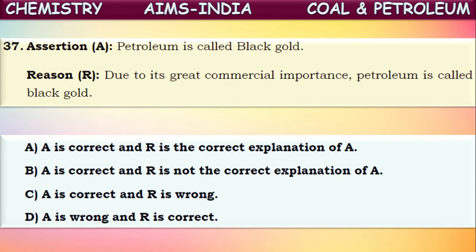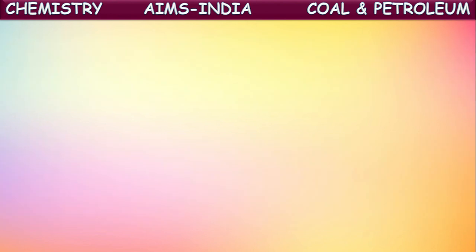Next assertion-reason question. Assertion: petroleum is called black gold. This is correct. Reason: due to its great commercial importance, petroleum is called black gold. This is the correct reason for the assertion. Both statements are correct and the reason correctly explains the assertion. The correct answer is A.